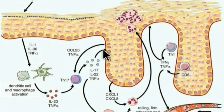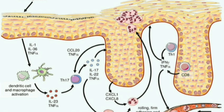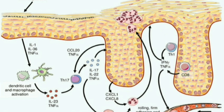Abnormal keratinization seen in psoriasis involves the overexpression of early differentiation markers such as corneodesmosin, small proline-rich proteins, cystatin A, and transglutaminase 1, while late differentiation markers such as loricrin and filaggrin are downregulated.